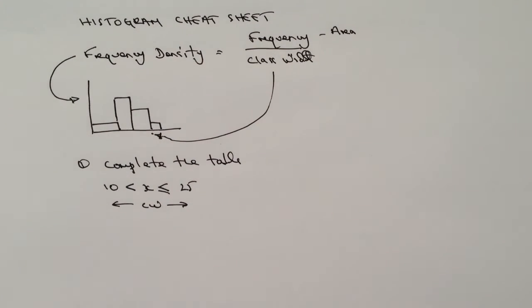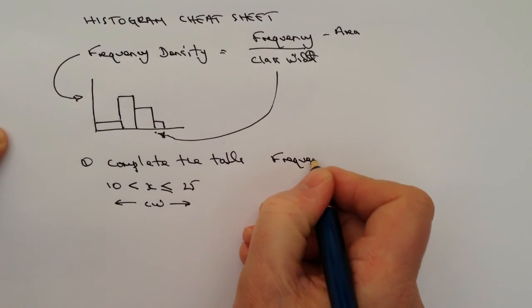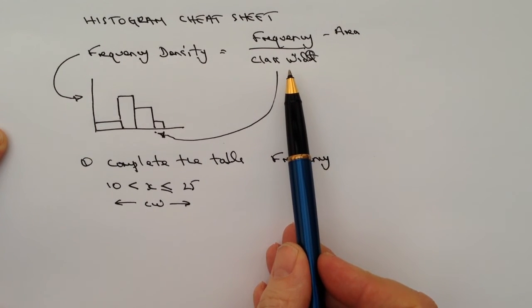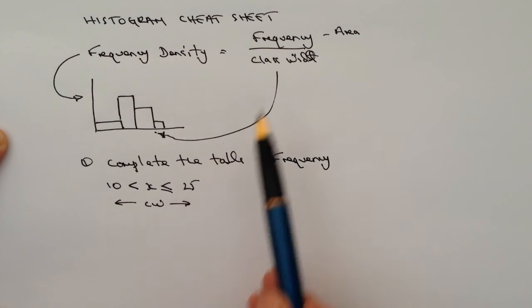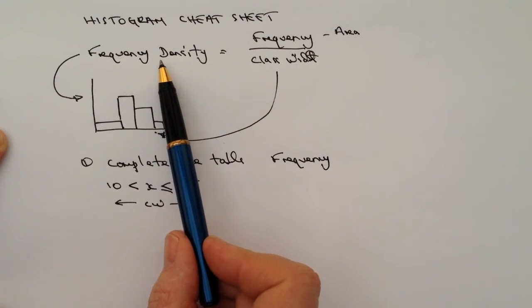That might be given to you and it might ask you to calculate the frequency. We know the class width from the formula—in this case it would be 15. Then what we would normally do is refer to the histogram itself, and that will give us the frequency density.